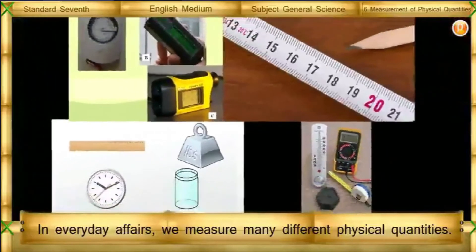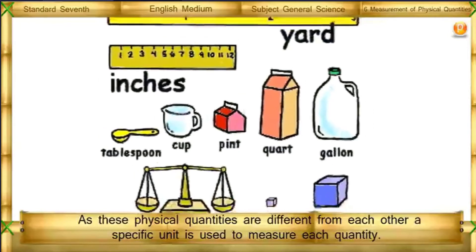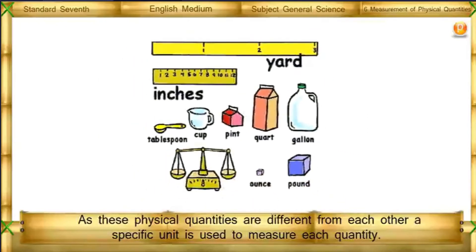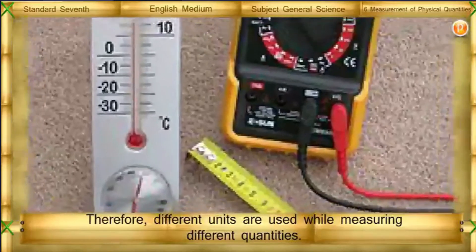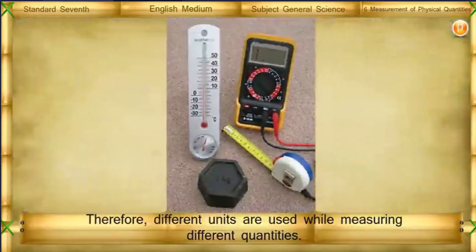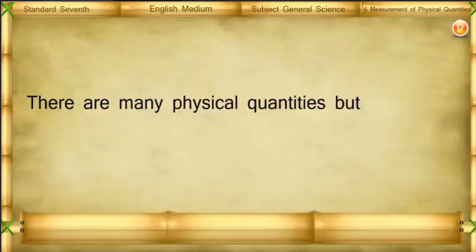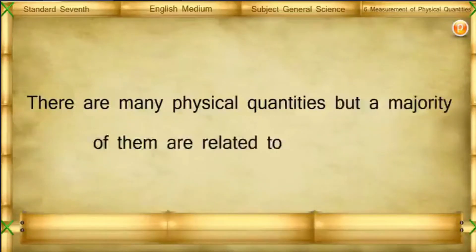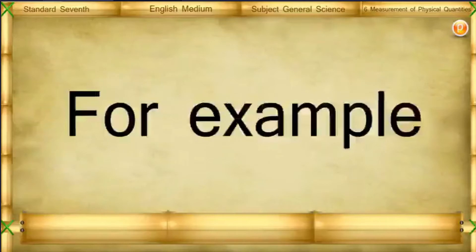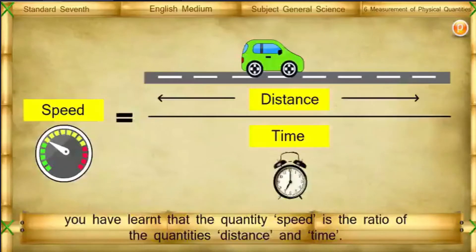In everyday affairs, we measure many different physical quantities. As these physical quantities are different from each other, a specific unit is used to measure each quantity. Therefore, different units are used while measuring different quantities. There are many physical quantities, but a majority of them are related to each other. For example, speed is the ratio of the quantities distance and time.